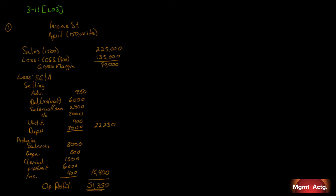Number two: redo number one using the contribution format with costs organized by behavior — on both a total and per unit basis down through the contribution margin. Once we hit contribution margin we can stop the per unit calculation, though we'll do it for fixed costs anyway to make a point. We'll have a total column and a per unit column. Starting at the top: sales are $225,000 total, and $1,500 per unit.